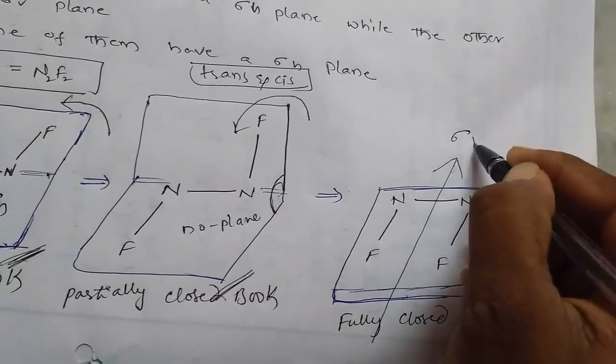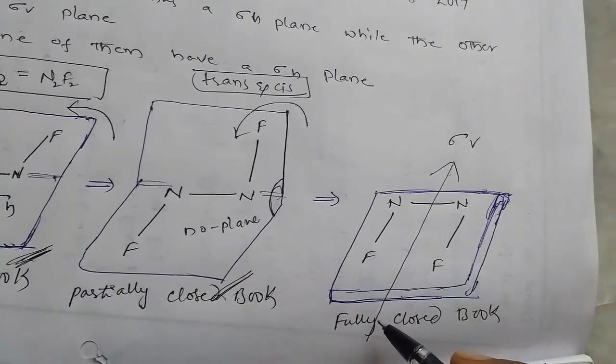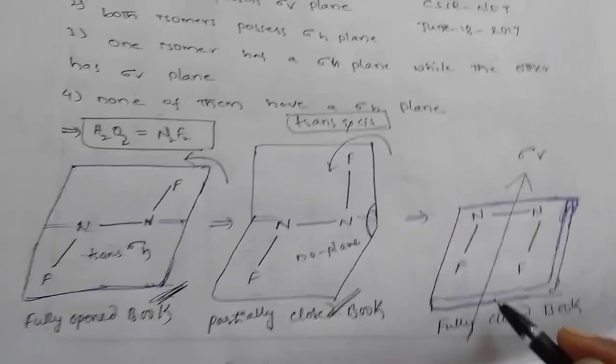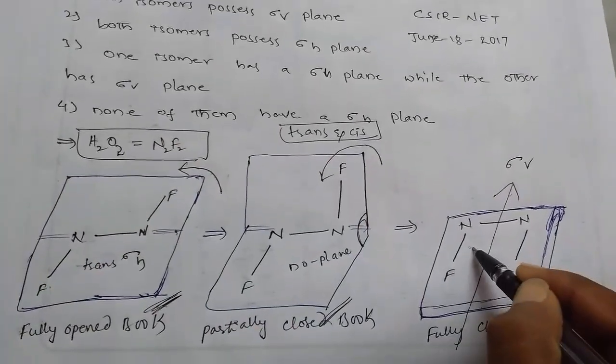So fully closed, it contains sigma V plane. It contains sigma V plane. So that's why in the given problem, one isomer, this is cis one.